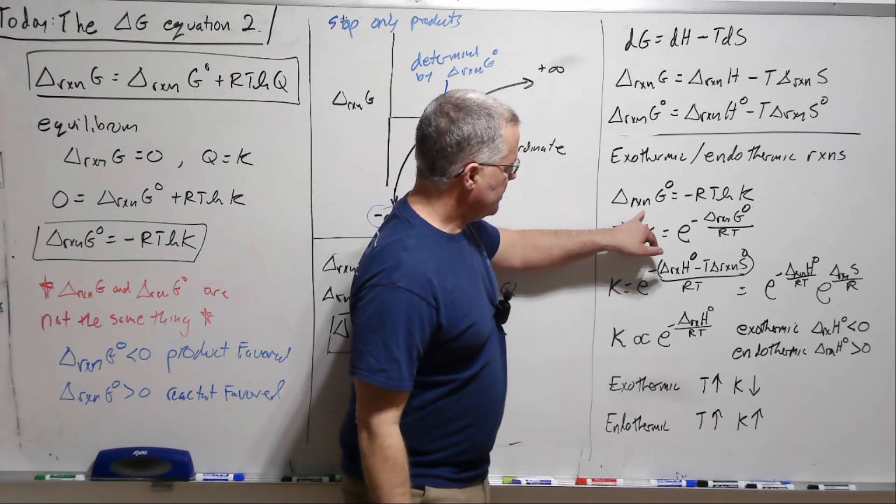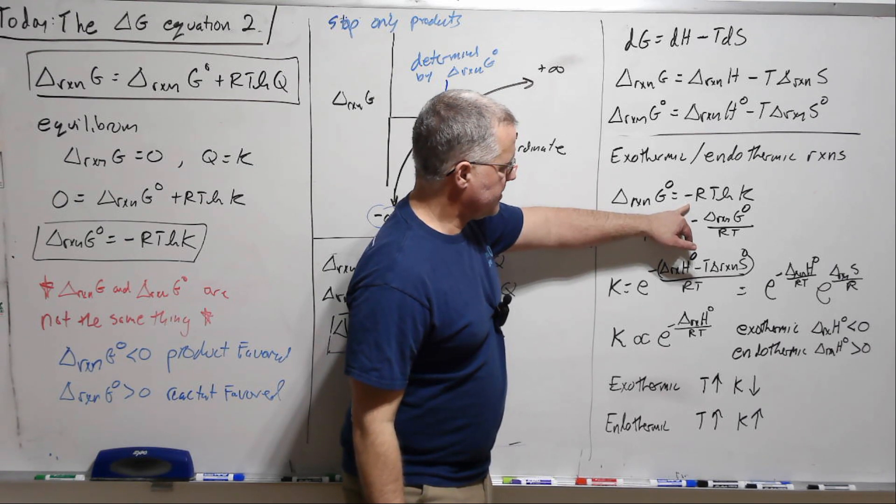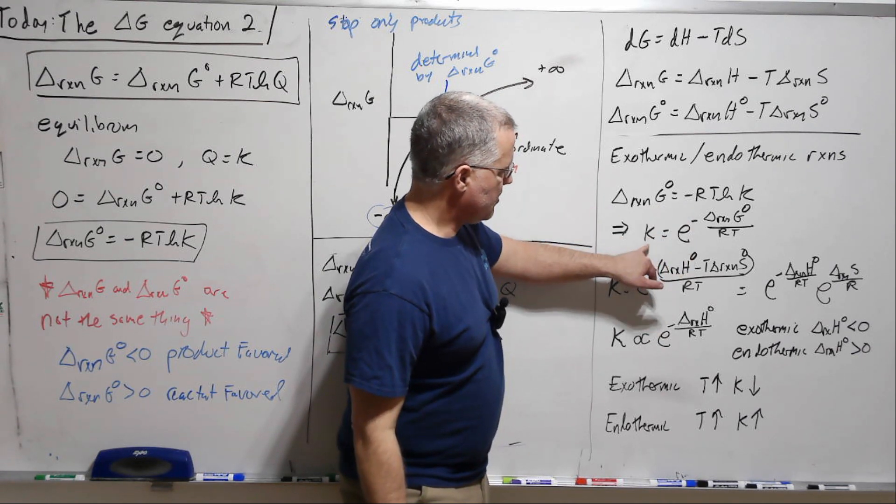So let's take Delta G standard and write it like this. Okay, that's what we know it is. Now let's solve for K.